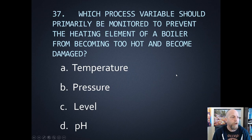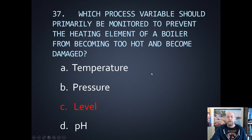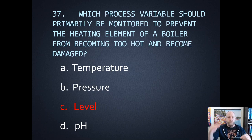Number thirty-seven: which process variable should primarily be monitored to prevent the heating element of a boiler from becoming too hot and being damaged? The heating element ultimately controls the temperature, but in order to prevent it from burning out, we need to control the level — we need it always immersed in the water so it can create the steam. We're always looking at the level being maintained so it doesn't go below the element.